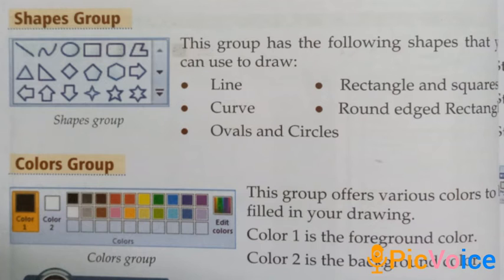The shapes group consists of different shapes, and by using these shapes we can draw lines, rectangles, squares, curves, round-edged rectangles, ovals and circles. The shape tool is used to draw different shapes. The colors group offers us various colors to fill in the drawing. There are two types: color 1 is the foreground color and color 2 is the background color.